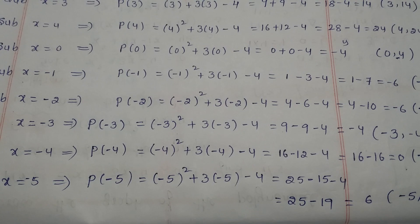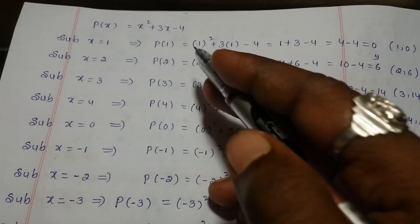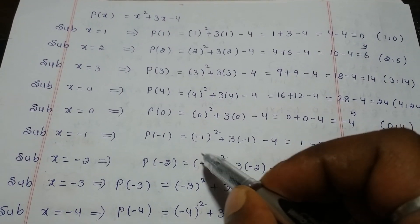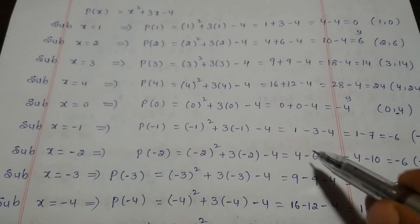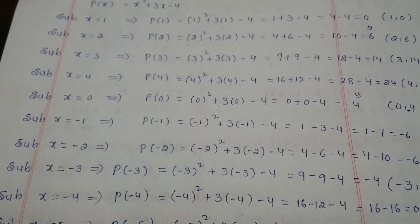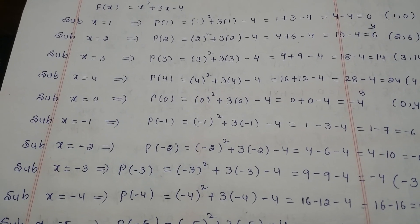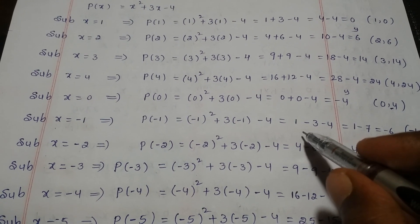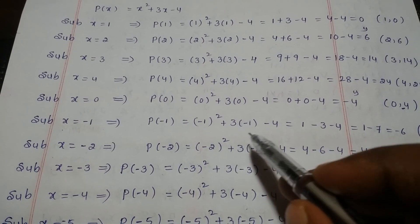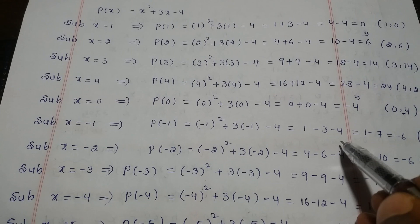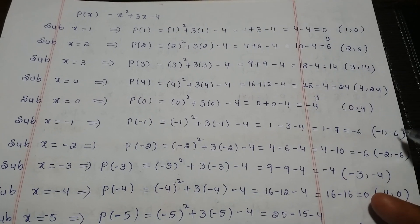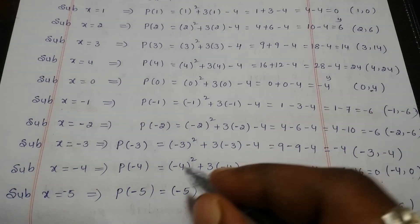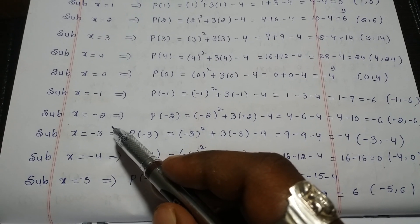Substituting x is equal to minus 1: minus 1 square plus 3 into minus 1 minus 4. Minus 1 square is 1, plus into minus is minus, so 1 minus 3 minus 4 equals 1 minus 7, that is minus 6. The point is minus 1 comma minus 6.